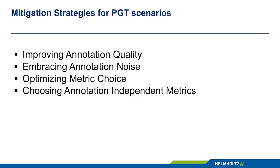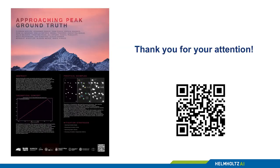Besides practical examples from microscopy, we review four potential mitigation strategies to deal with a PGT scenario: improving annotation quality, embracing annotation noise, optimizing metric choice, and choosing annotation-independent metrics. Please scan the QR code to find further details in our manuscript or visit our poster.